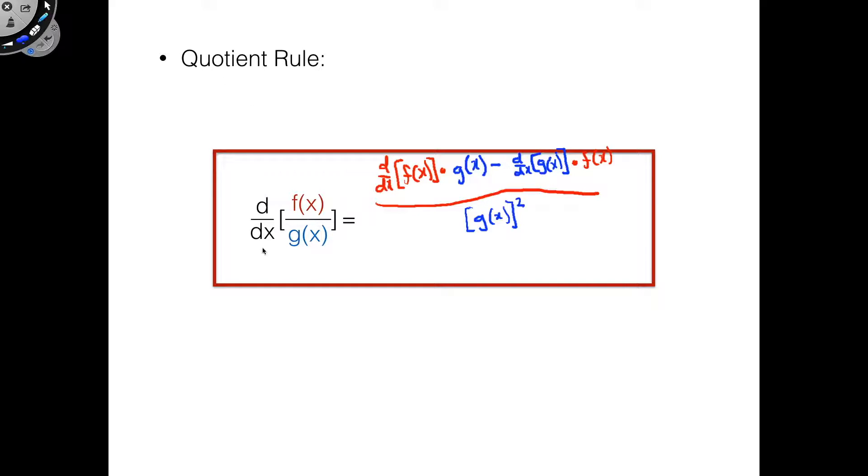Now if you're not a fan of the quotient rule, you can rewrite this as d/dx of f(x) times g(x) to the negative one. And then this just becomes a product rule. If you're a fan of the product rule you can do something like this, but honestly sometimes it's just easier to go ahead and do a quotient rule.